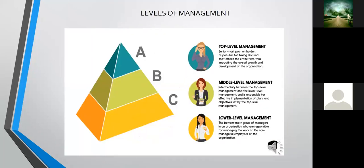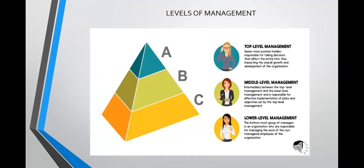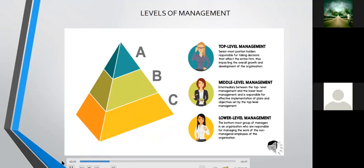In an organization, we have what is called upper or top management, middle management, and lower level management. Top level management is composed of the president, CEO, general manager, and board of directors. Middle management includes department heads, branch managers, and the vice president. In lower level management we find supervisors, team leaders, and foremen.